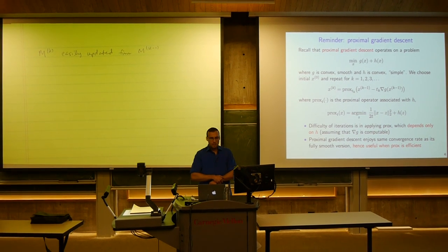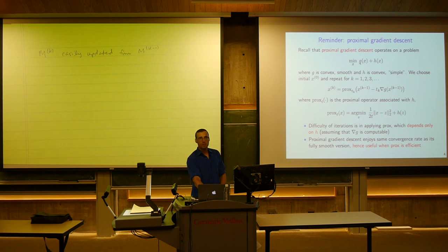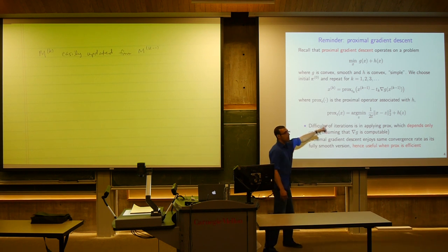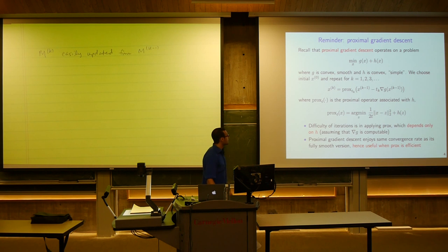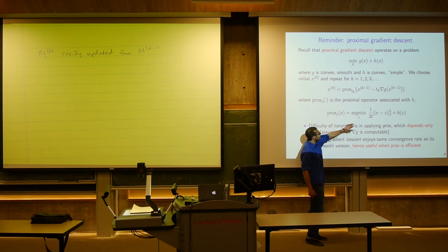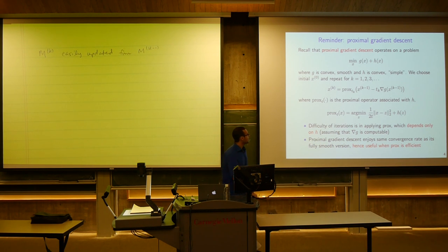As a reminder, in the third or fourth week of class we talked about proximal gradient, which operates on a composite criterion: some function G plus another function H, where both are convex, G is smooth, and H is what we call simple — meaning we know its proximal operator and can evaluate it. The proximal operator is the minimizer of one over two T times the squared distance between X and Z plus H of Z, where Z is the optimization variable. Given an input X, the proximal operator is the minimizer of this convex program.